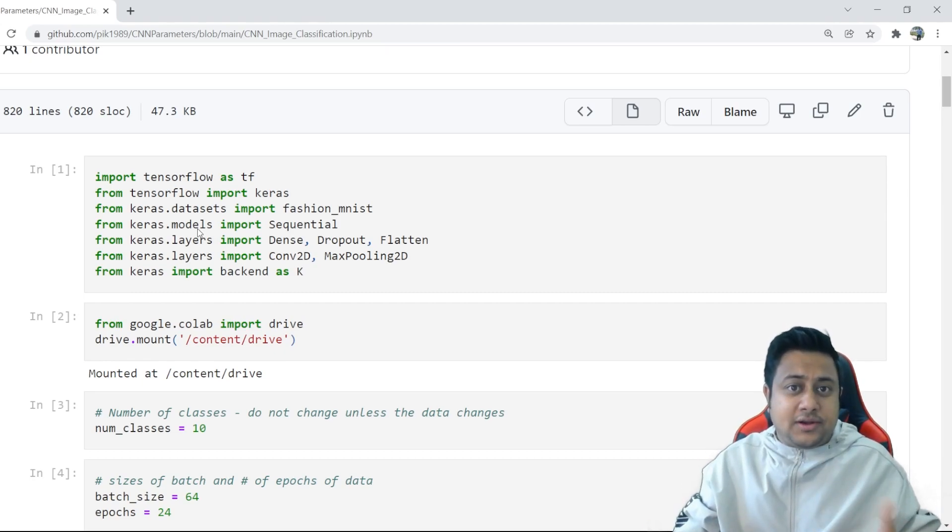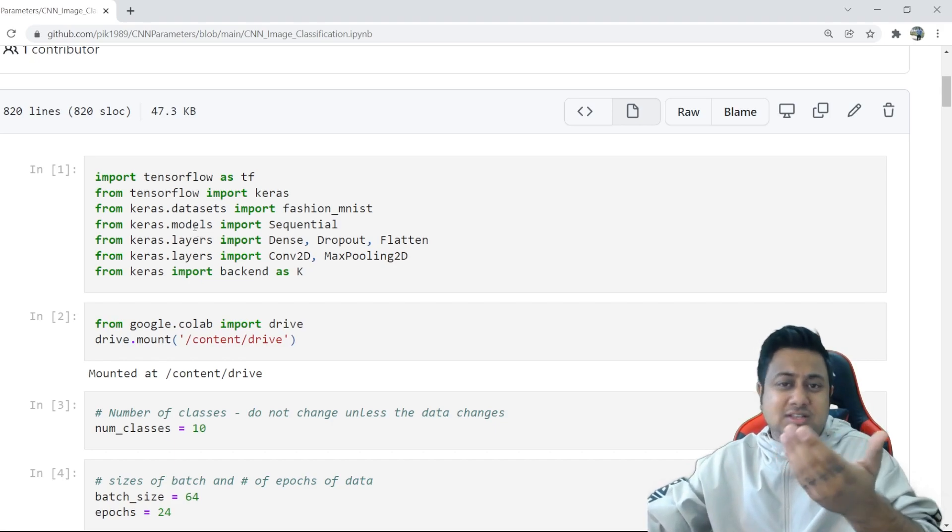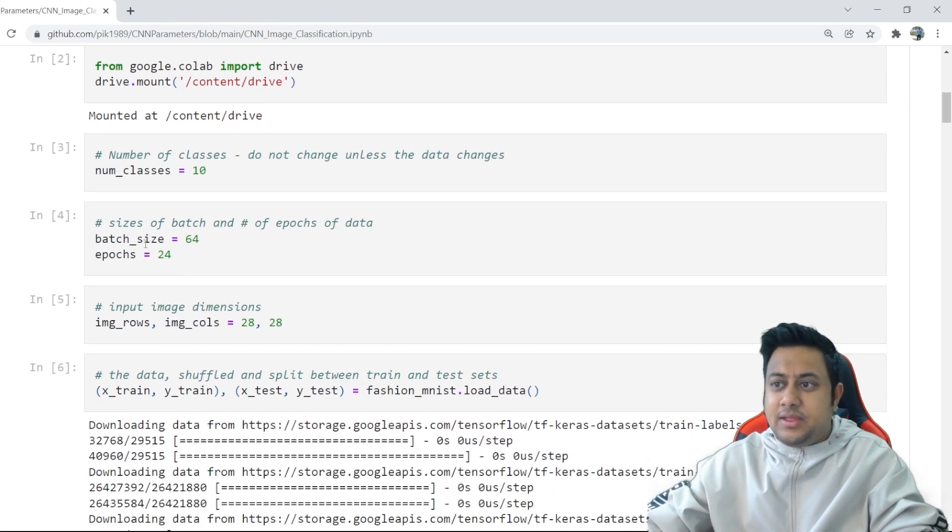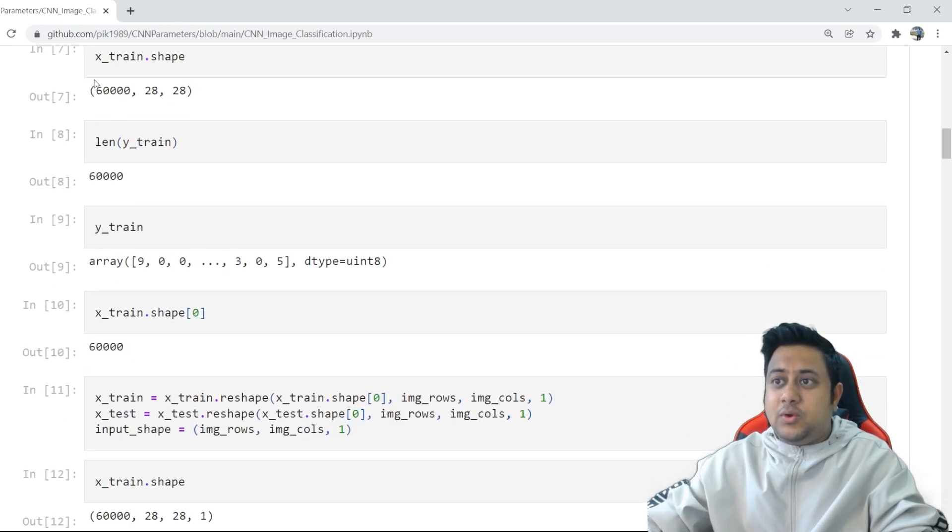There was one of the videos which I released like a couple of days back where I talked about how parameters are calculated in CNN. This is the same exact dataset. I will also be leaving this dataset link in the description below. Now here, make a note - we are using 64 batch size. So batch size is 64, epochs is 24. Now you can see the training data is 60,000.